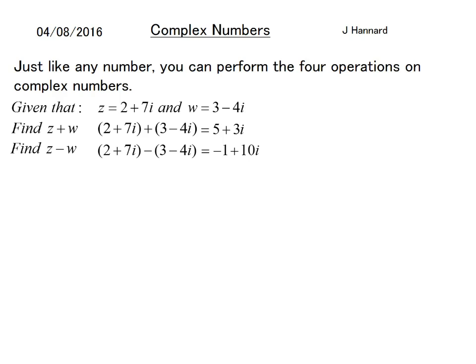It's convention to write the real before the imaginary part, so we write -1 + 10i and never 10i - 1. z times w is a bit more interesting—it's like a bracket expansion, so we end up with (2 + 7i)(3 - 4i) = 6 + 21i - 8i - 28i².